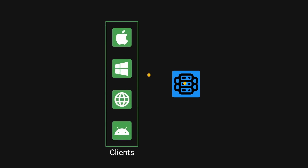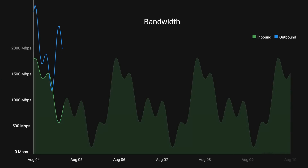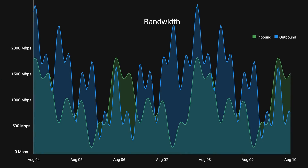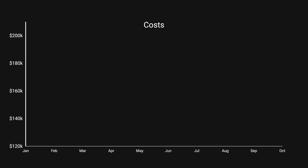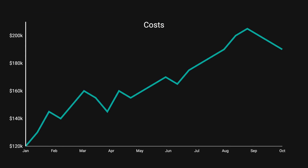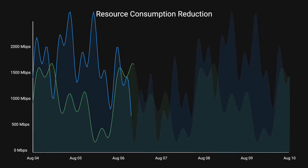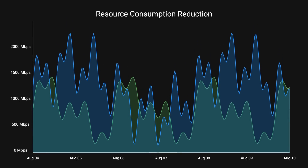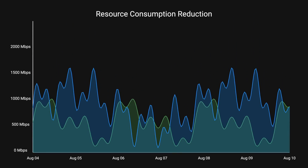Discord's real-time communication service used a WebSocket bandwidth that was progressively consuming more resources and driving up costs, estimated at hundreds of thousands of dollars. This was a big issue for the company until they discovered a way to reduce that by 40%.